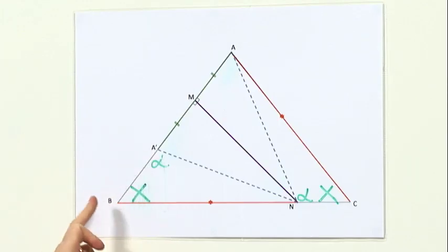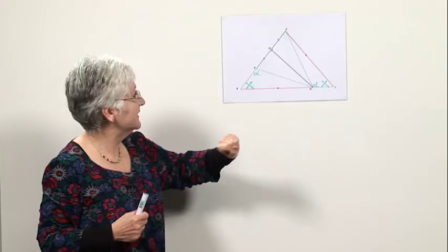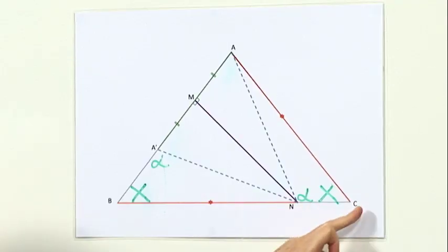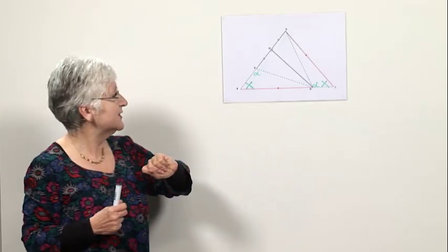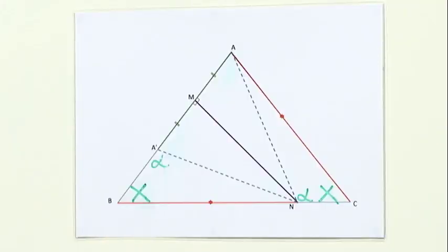When we look at the triangles A dashed BN and the triangle NCA, we see that we have triangles with the same angles, but they also have a side of the same length because BA is the same length as CA, and so these triangles are also congruent.